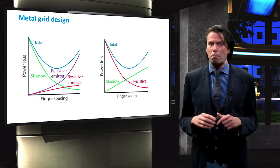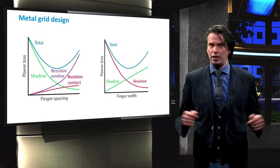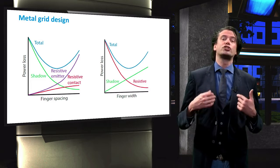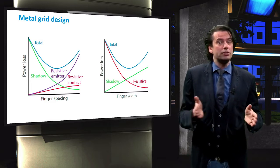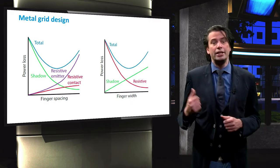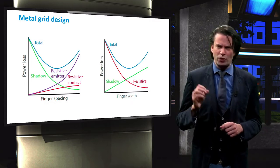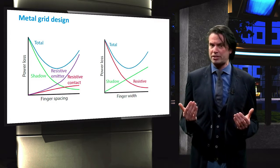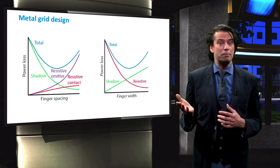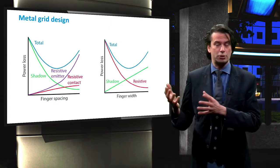A similar plot can be made for power loss versus finger width. The larger the width, the larger the shading losses will be, but with increasing width the resistance decreases. Again, an optimum exists at which the power losses are minimal. We see that optimizing the front contact pattern is a complex interplay between the finger width and spacing.